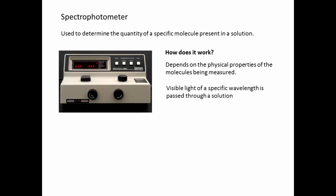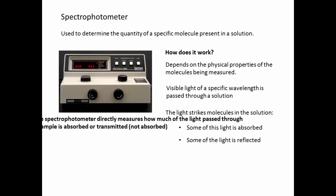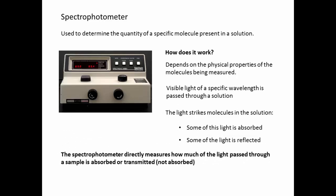Visible light of specific wavelengths is passed through a solution inside the machine. The light strikes the molecules in the solution. Some of the light is absorbed by those molecules. Some of the light is reflected or not absorbed. The spectrophotometer directly measures how much of the light passed through the sample and is either absorbed or transmitted.